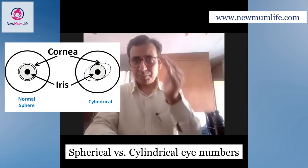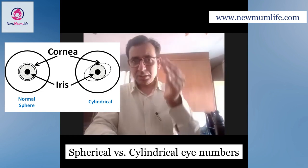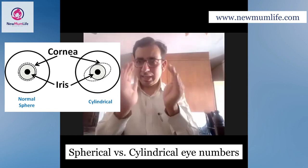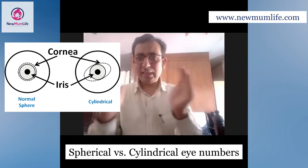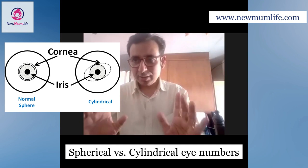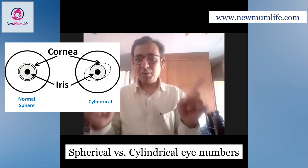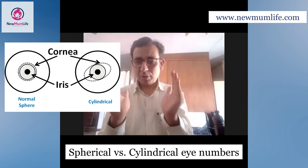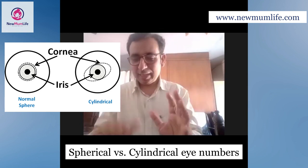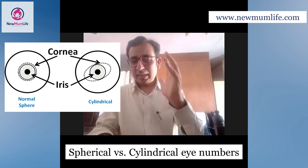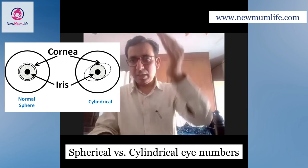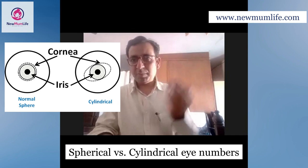In simple words, if the cornea is shaped like a cylinder, then the cylindrical number exists. And the other type of number — the spherical number — will be either plus or minus: if the eyeball is small, then plus; if the eyeball is large, then minus. But if the shape of the cornea is different at different angles, then the cornea is steep in one direction and flat in the other.